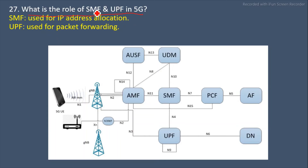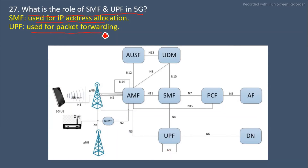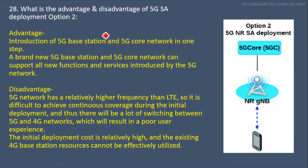Next question: What is the role of SMF and UPF in 5G? Both SMF and UPF are part of the 5G core network structure. SMF — Session Management Function — is used for IP address allocation. UPF — User Plane Function — is used for packet forwarding.